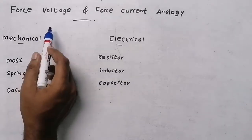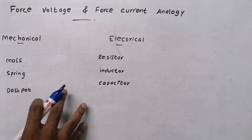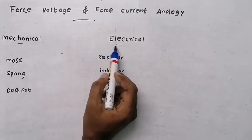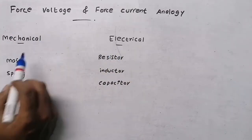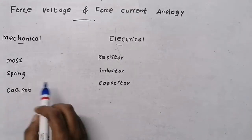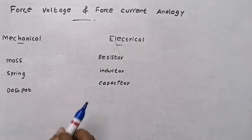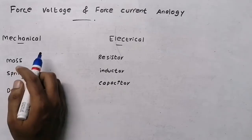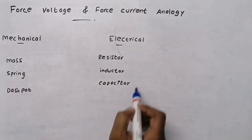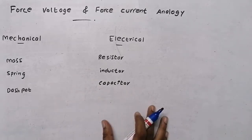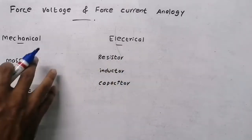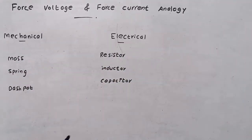In this video we are going to learn about force-voltage and force-current analogies. In the previous video we discussed how to model a system. For modeling a mechanical system we need mass, spring, and dashpot. For modeling an electrical system we need resistor, inductor, and capacitor. Making an electrical system is easier since resistor, inductor, and capacitor are more easily available than mass, spring, and dashpot.